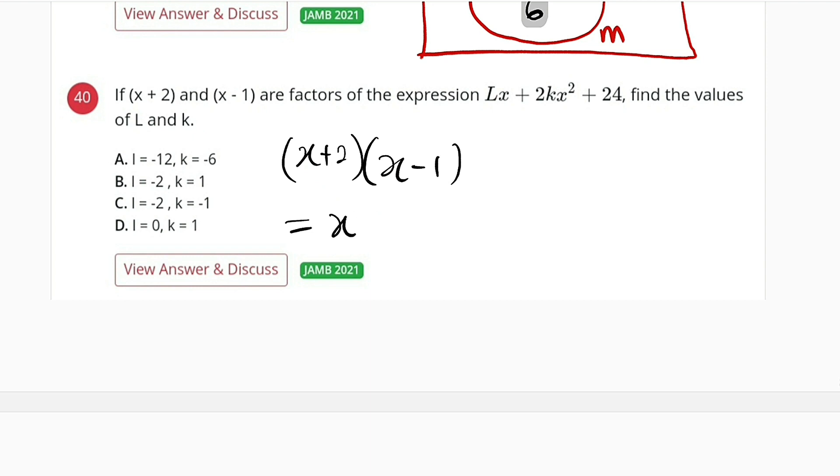This is equal to x times x is x squared. x times negative 1 is negative x. Then we take the second term, 2 times x is 2x. And lastly, 2 times negative 1 is negative 2. Let's simplify the middle term. Negative x plus 2x is just x. So we have x squared plus x minus 2.